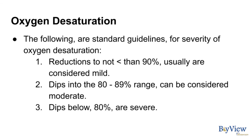The following are standard guidelines for severity of oxygen desaturation: reductions to not less than 90 percent are usually considered mild. Dips into the 80 to 89 percent range can be considered moderate. Dips below 80 percent are severe.